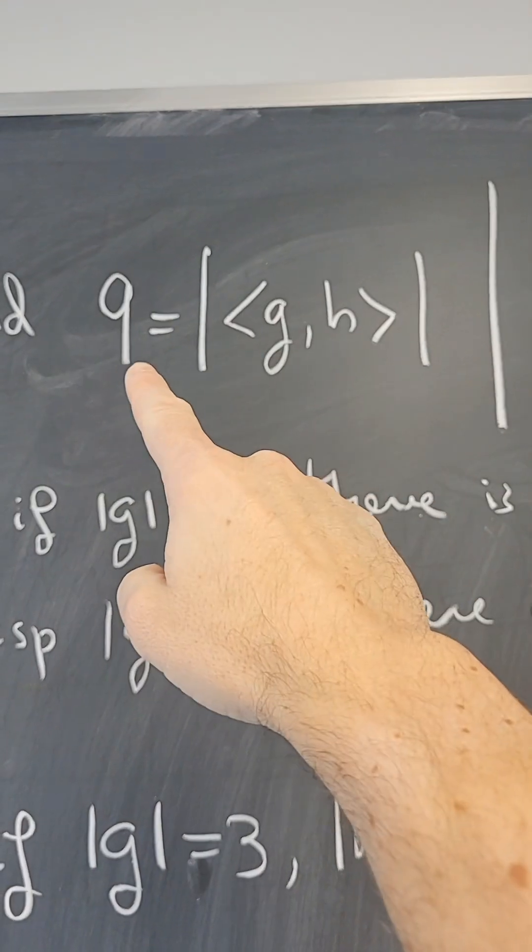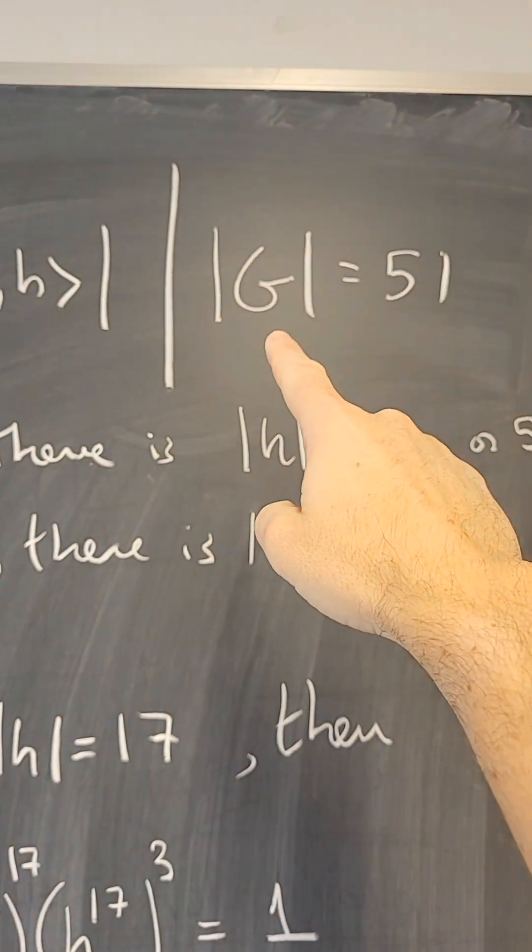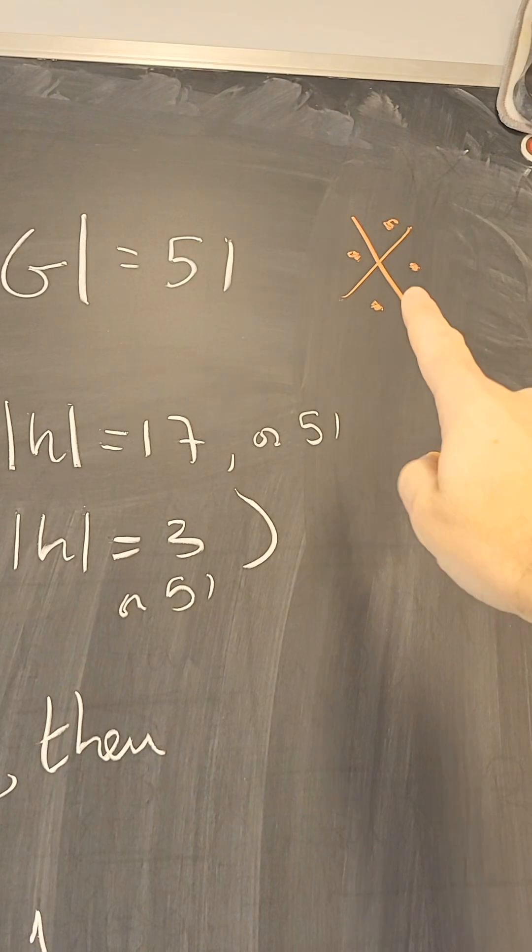Then that subgroup has order 9, but the order of the subgroup has to divide the order of the group, which is 51, and that is a contradiction.